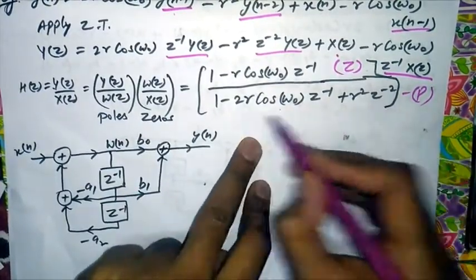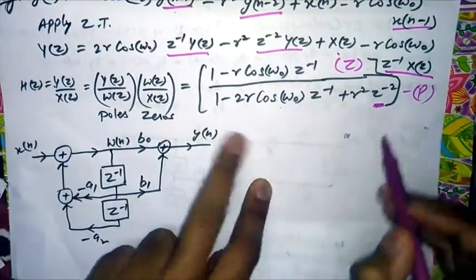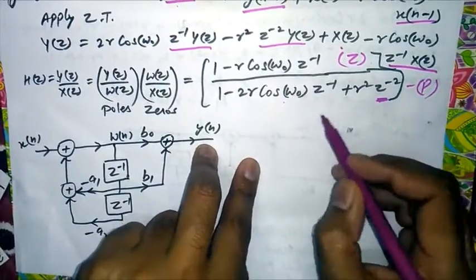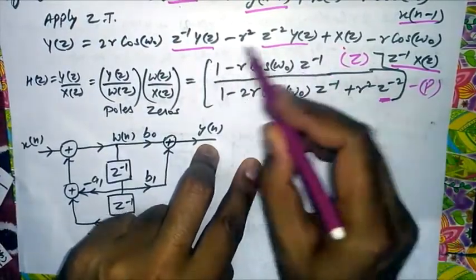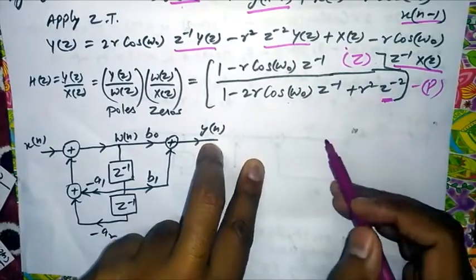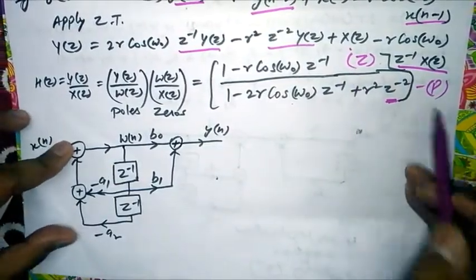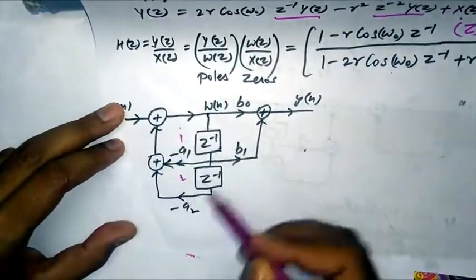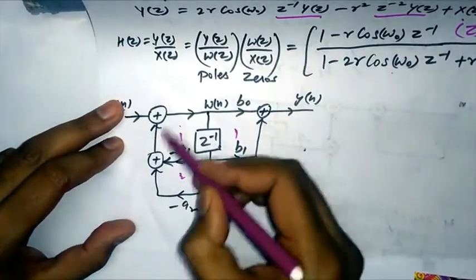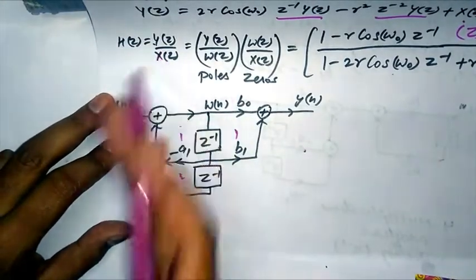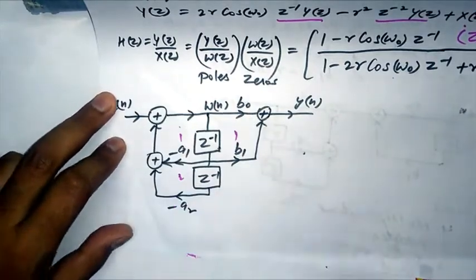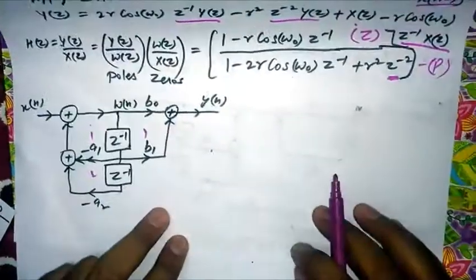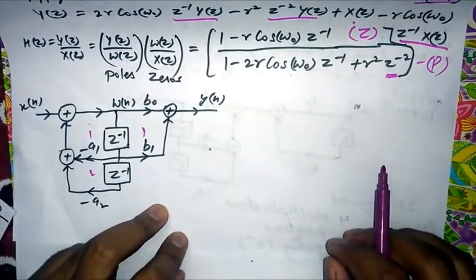The denominator is a quadratic equation with highest power 2, so it has two poles. The numerator is a linear equation, so it has a single zero. Therefore the system has one zero and two poles (double pole). The Direct Form 2 structure places poles first followed by zeros. This completes the example. Thank you for watching.